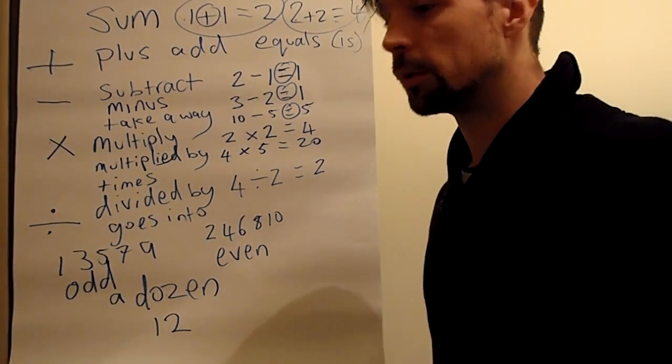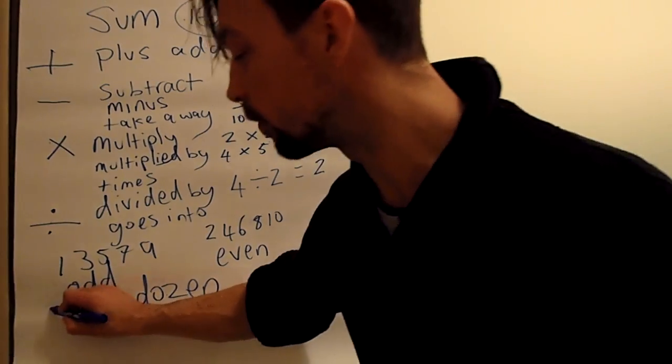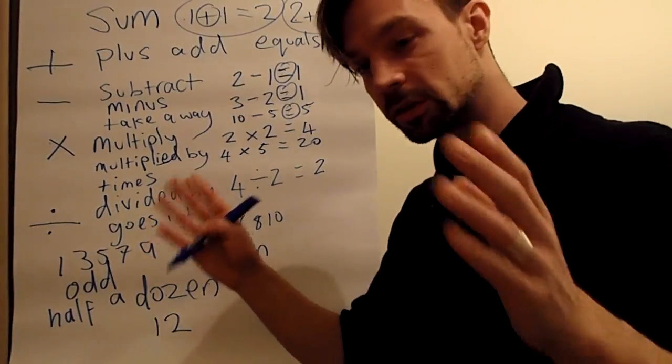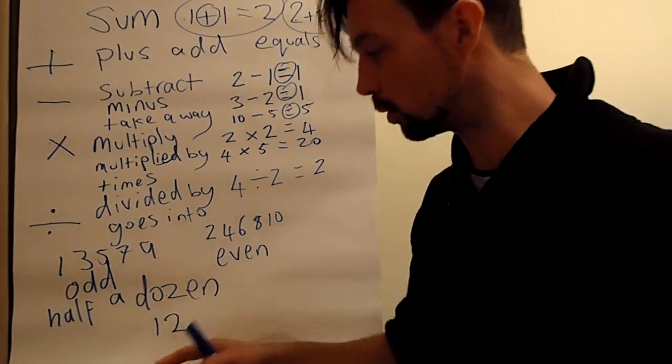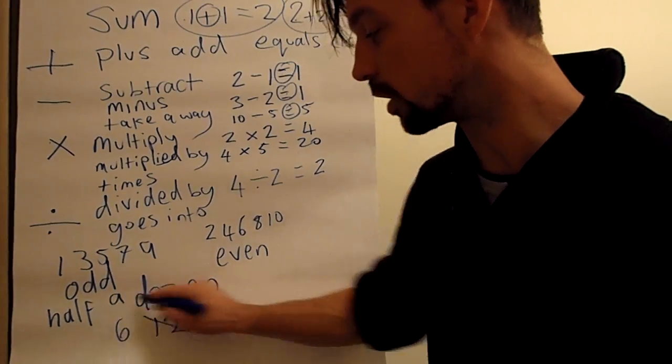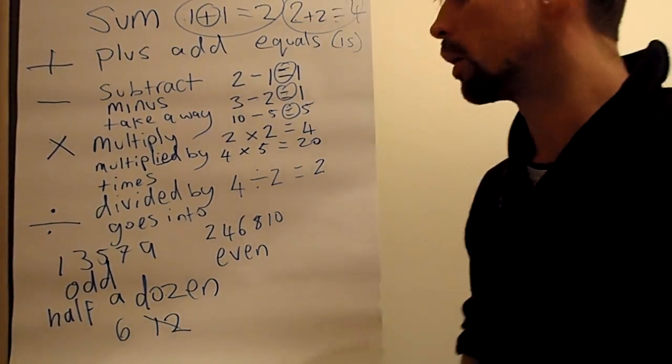You can have half a dozen. And half means between one and zero, so half a dozen means six. Half a dozen is six, a dozen is twelve.